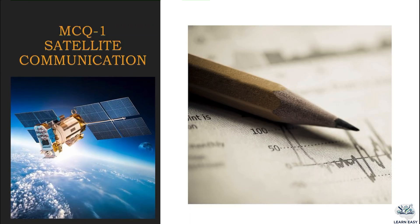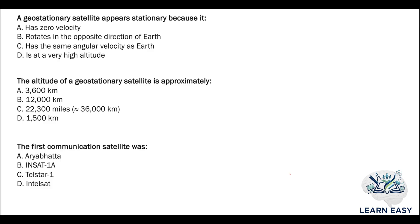MCQ set on satellite communication. First question: a geostationary satellite appears stationary because — option A: has zero velocity; option B: rotates in the opposite direction of earth; option C: has the same angular velocity as earth; option D: is at a very high altitude. The answer is option C. A geostationary satellite appears stationary because it has the same angular velocity as earth.